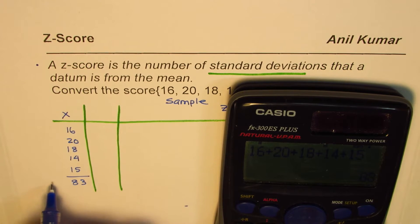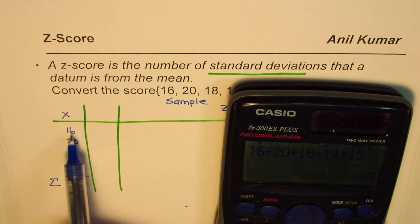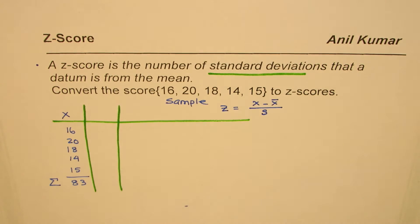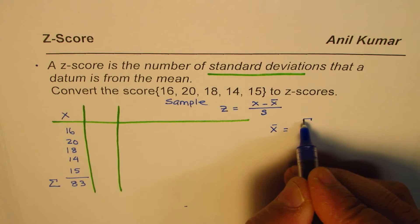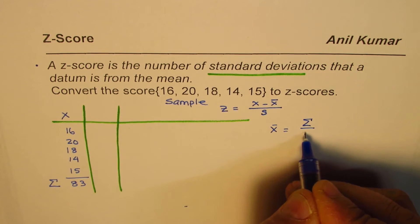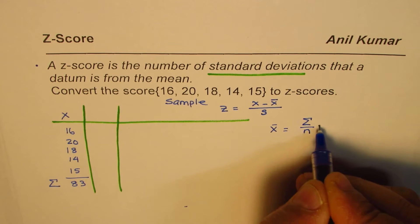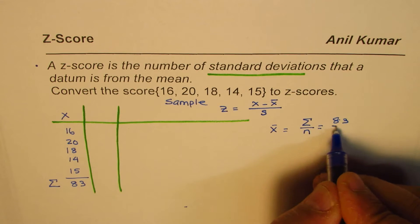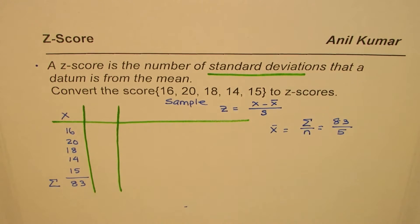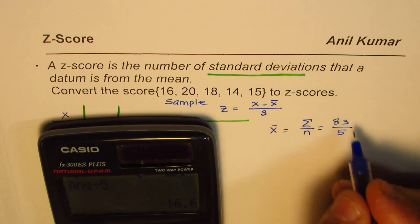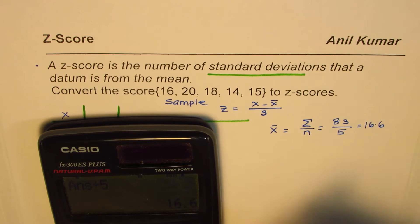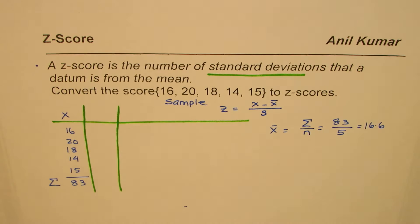The total is 83. There are 5 numbers. To find the average, we divide the sum by the number of values: 83 divided by 5, which gives us 16.6. So the mean x-bar is 16.6.